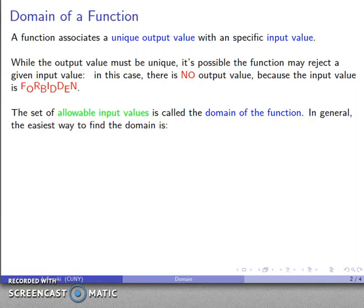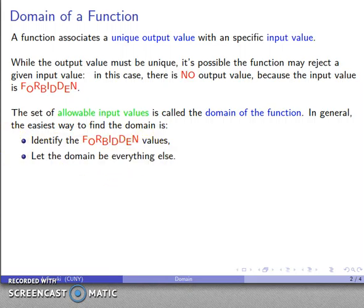For a variety of reasons, in general the easiest way of figuring out what the domain is is to begin by identifying the forbidden values. And once you have those forbidden values, then your domain can be everything else.